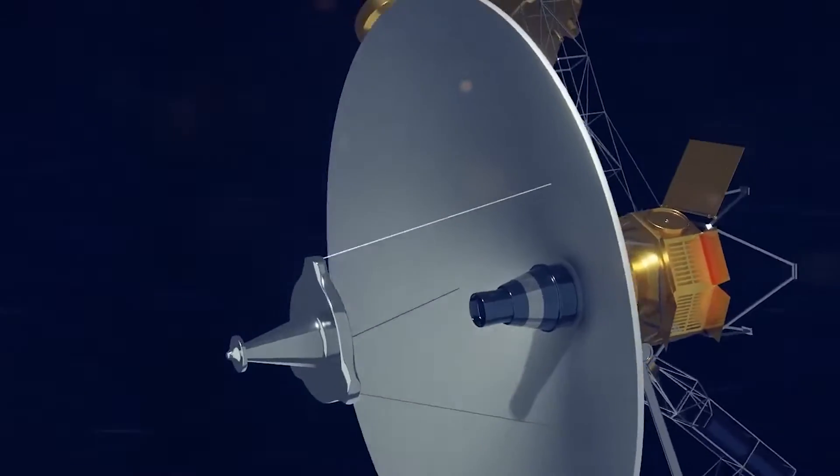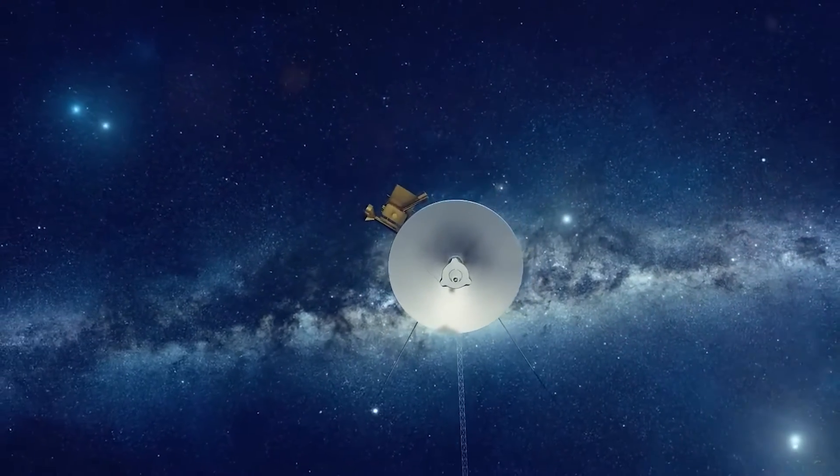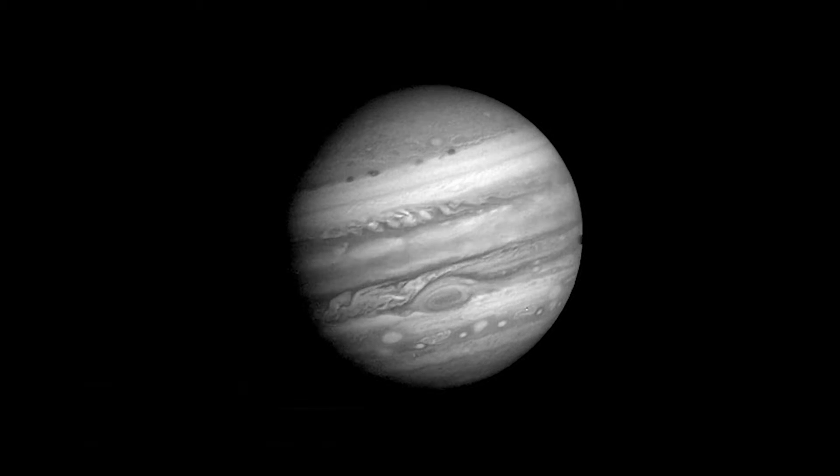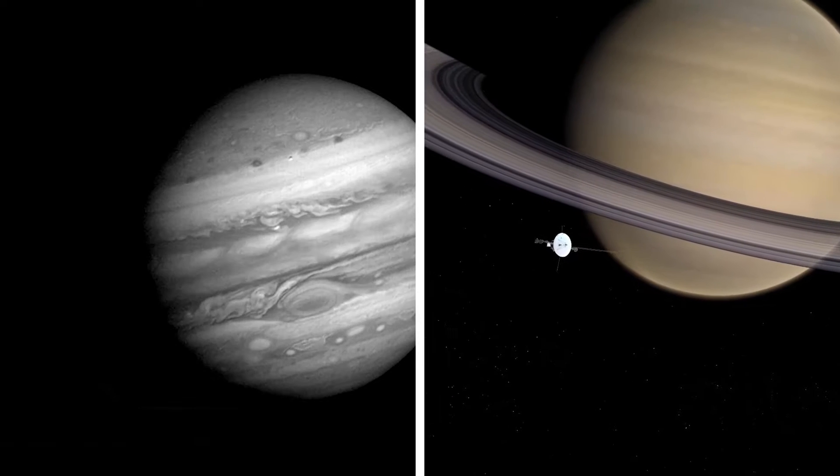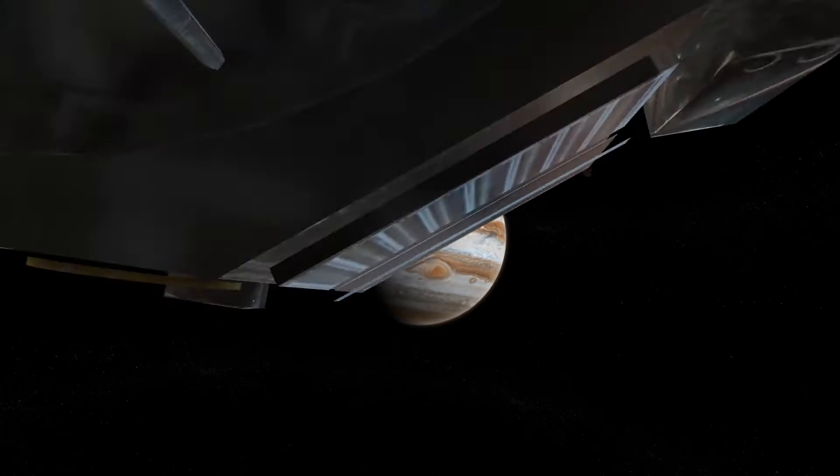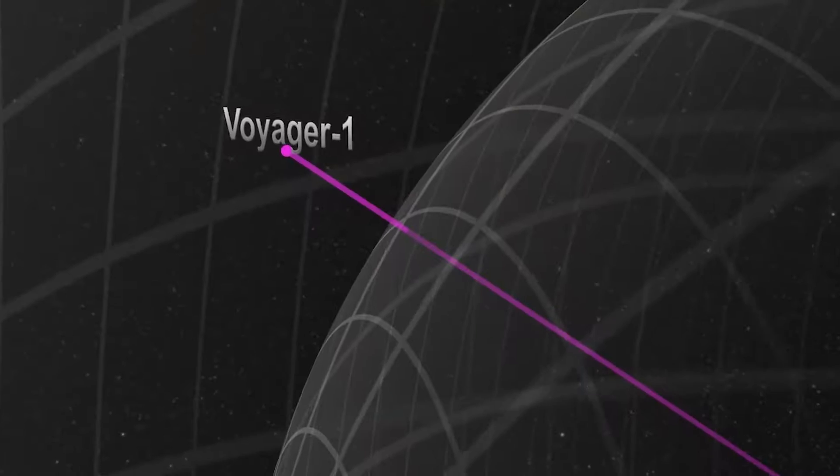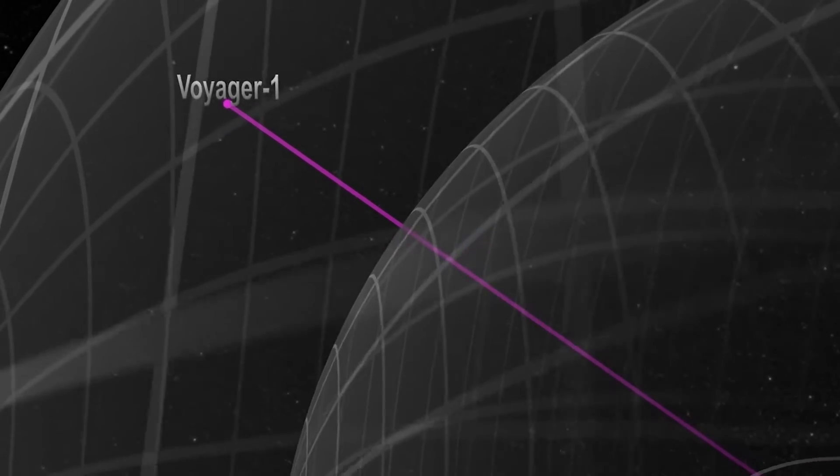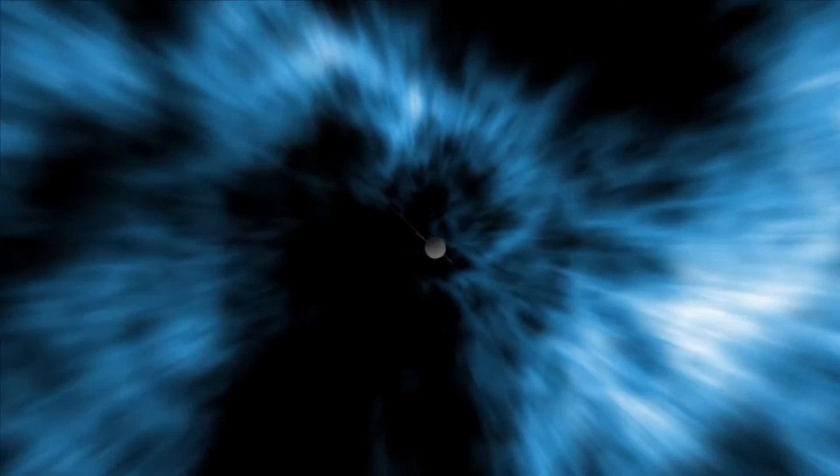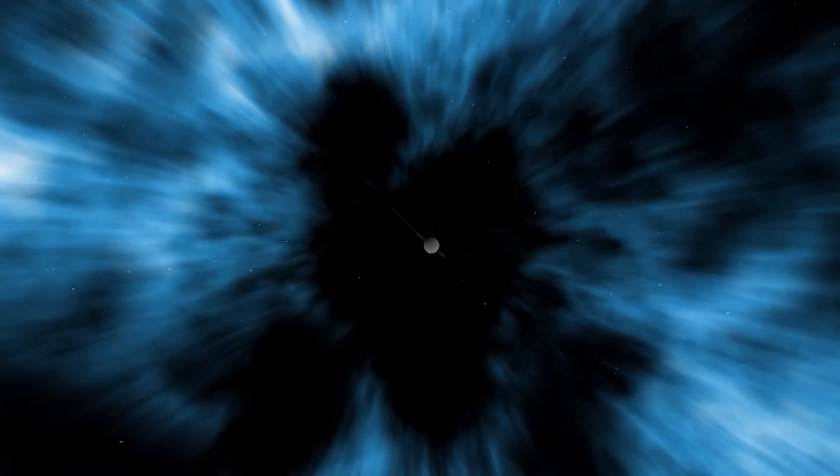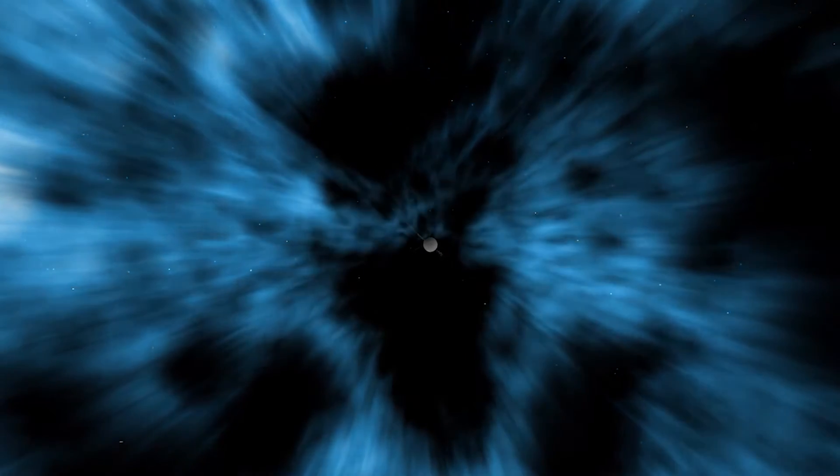The trajectory of Voyager 1 was planned with precision to maximize its scientific potential. It was engineered to pass by various celestial bodies including Jupiter and Saturn. However, it was the journey beyond these planets that truly set Voyager 1 apart. As it ventured farther from the sun, it began to encounter the outermost fringes of the sun's influence. In this boundary region, Voyager 1 shared humanity's first glimpses of what lies outside our solar system.